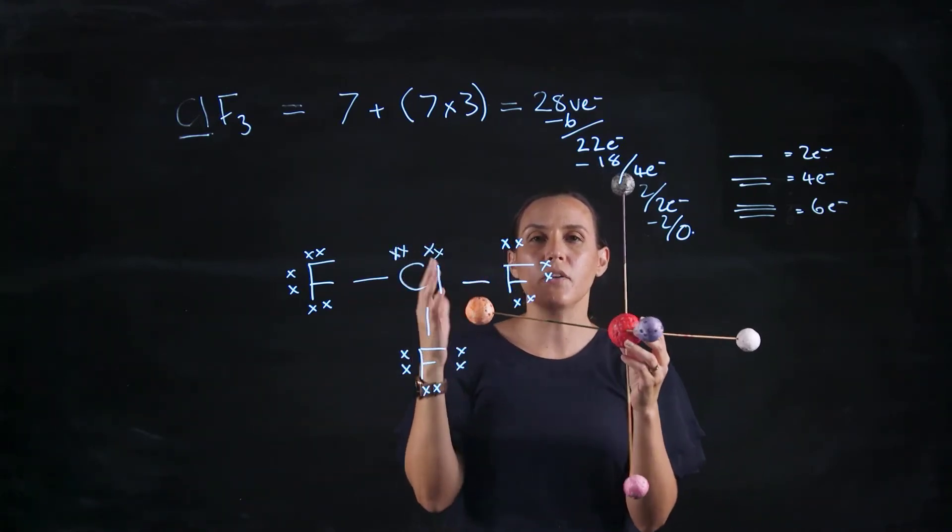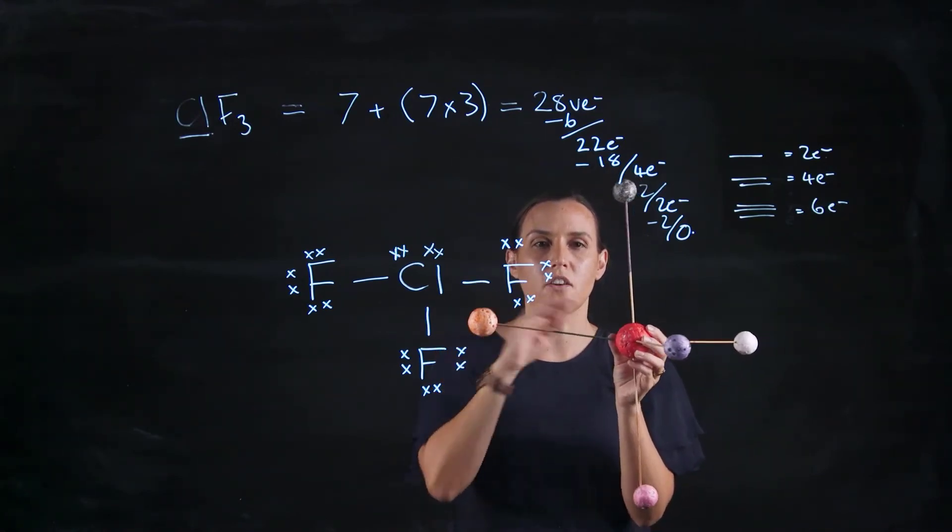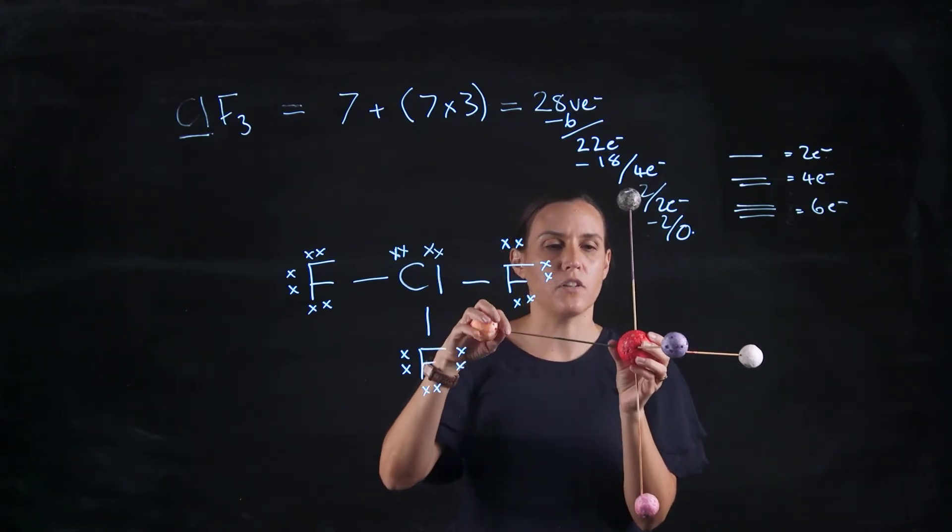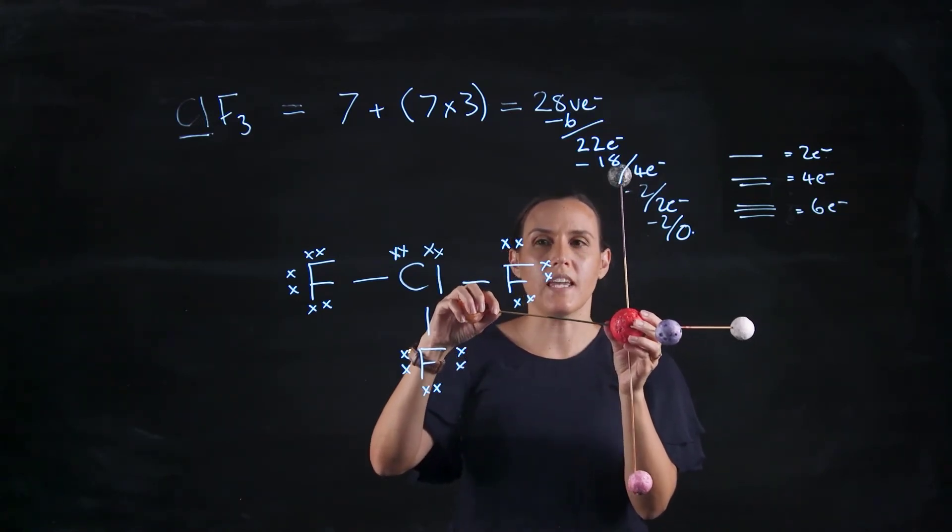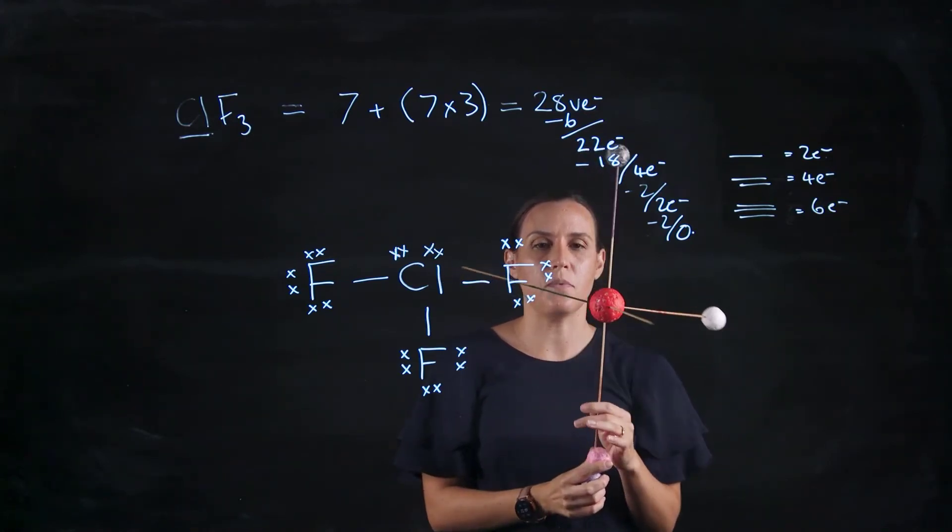So remember when we're looking at our five, so central one with five groups attached, we take those middle ones, so those planar or equatorial ones out. So we've taken out two of those and we're left with this shape here.